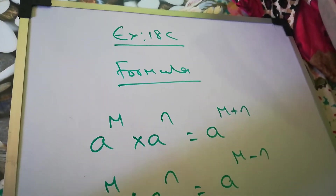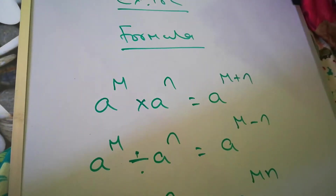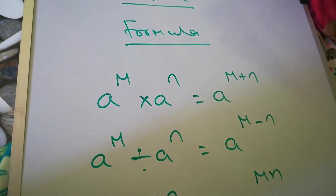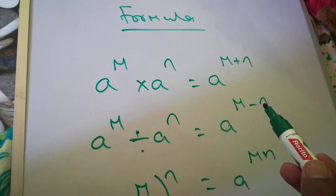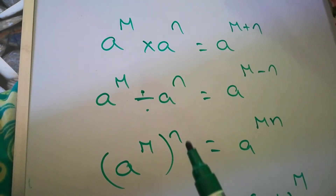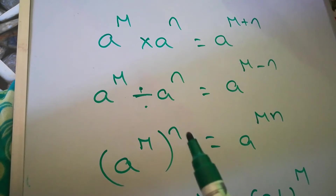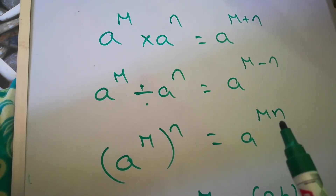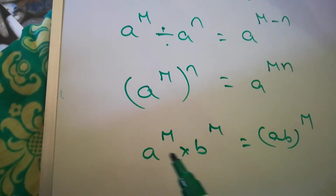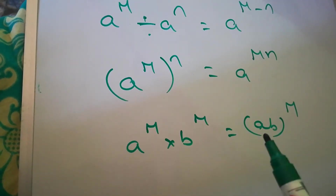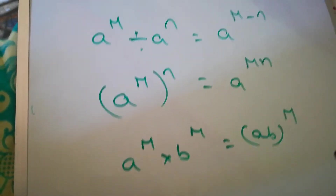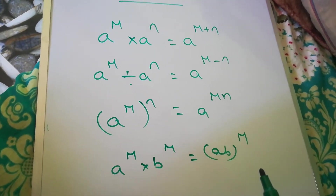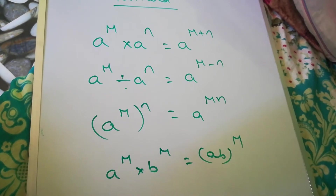Next, exercise 18C. The formula I gave here: a^m times a^n equals a^(m+n). So if it's multiplication, the powers add (plus); if it's division, the powers subtract (minus). And (a^m)^n means a^(m×n) — for example, if it's 5 and 4, we write 5 times 4 equals 20. Also, a^m times b^m equals (a×b)^m, so we write them together with the whole power m.